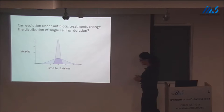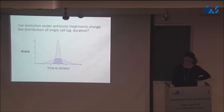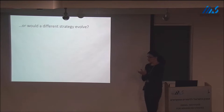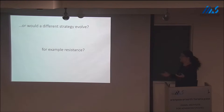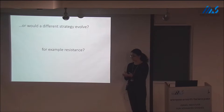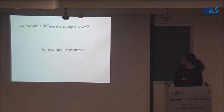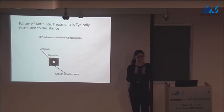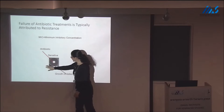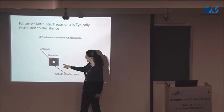Can we really evolve a lag time distribution? Is it something that can happen in the wild? Knowing that lagging bacteria have an advantage under antibiotic treatment, we put them under antibiotic treatment to see whether we can evolve that. But under antibiotic treatment, a different strategy could also evolve — for example, resistance — which is different in several ways. Resistance is usually due to mutation that renders the whole population more resilient to the drug. And how is it measured in the clinic? You plate bacteria on agar and put a disc with antibiotics in the middle — it diffuses and prevents growth within a certain radius. The larger this inhibition zone, the more sensitive the strain.